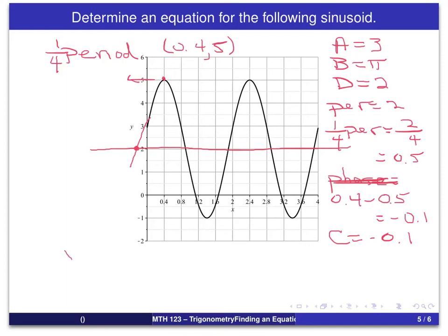So our equation becomes y equals 3 sine of π times x minus negative 0.1 plus 2.